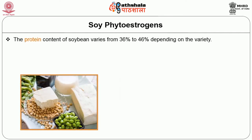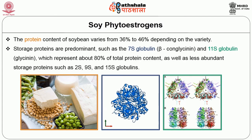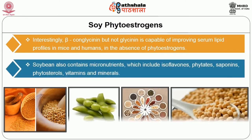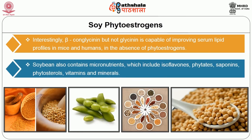The protein content of soybean varies from 36 to 46% depending on the variety. Storage proteins are predominant: 7S globulin (beta-conglycinin) and 11S globulin (glycinin) represent about 80% of the total protein content in soybeans. Another 15–20% consists of less abundant storage proteins such as 2S, 9S, and 15S globulins. Soybeans also contain micronutrients including isoflavones, phytates, saponins, phytosterols, vitamins, and minerals.